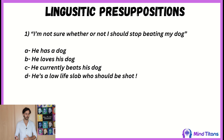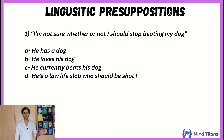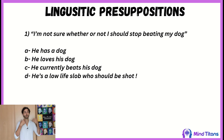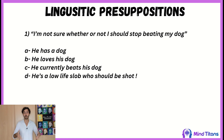However, 'he loves his dog' — that may or may not be the case. That is an interpretation; it is not presupposed, it is eventually linked but not validated. 'He currently beats his dog' — yes, that is validated because it is implied in the sentence. 'He is a low-life slob who should be shot' — that is not a presupposition, it is a judgment made by the person hearing the statement.